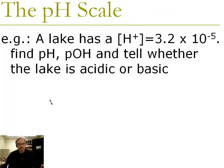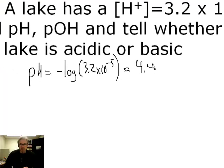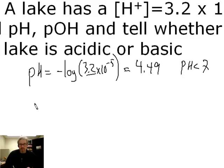Example: a lake has [H⁺] = 3.2 × 10⁻⁵. Find the pH, pOH, and determine if the lake is acidic or basic. pH = −log(3.2 × 10⁻⁵) = 4.49 (two decimal places because we have two sig figs). Since pH is less than 7, this is an acidic solution. For pOH, since pH + pOH = 14.00, we subtract: pOH = 14.00 − 4.49 = 9.51.